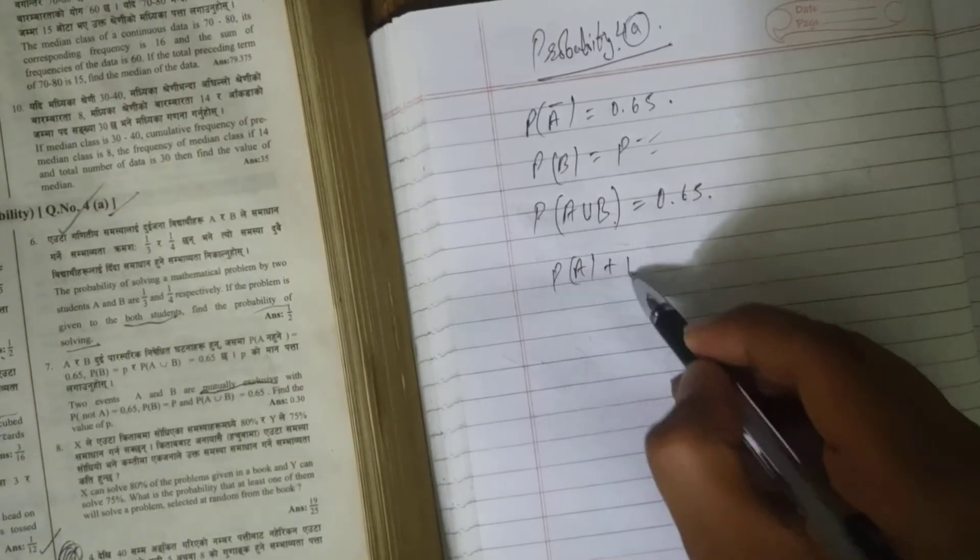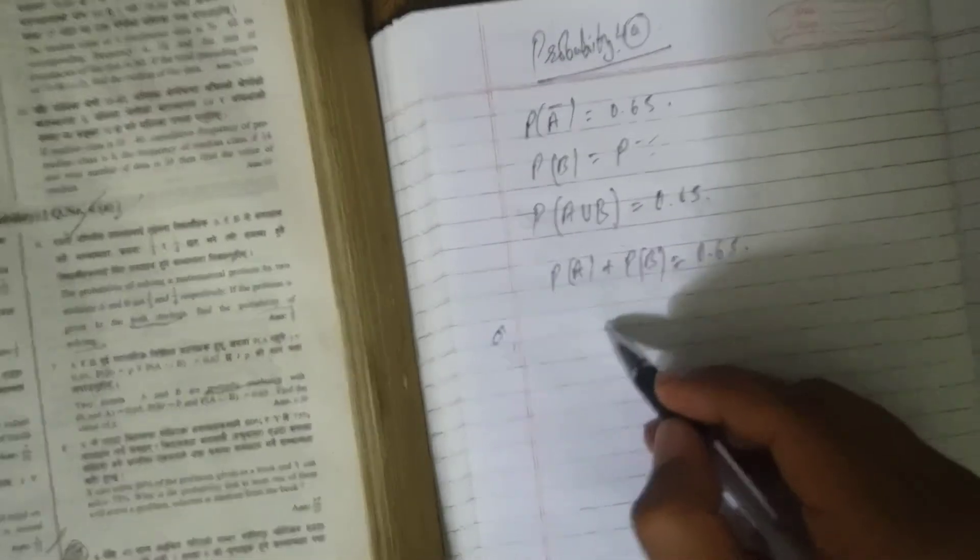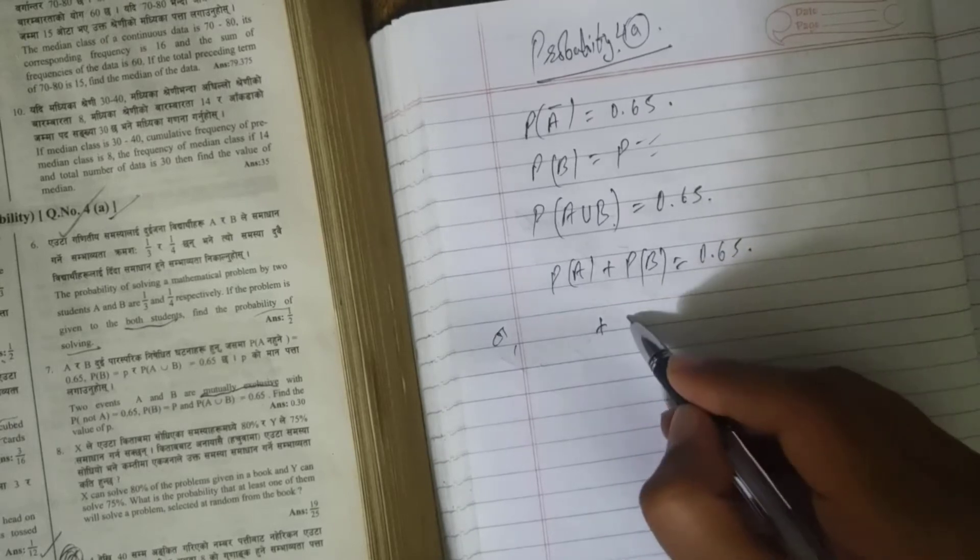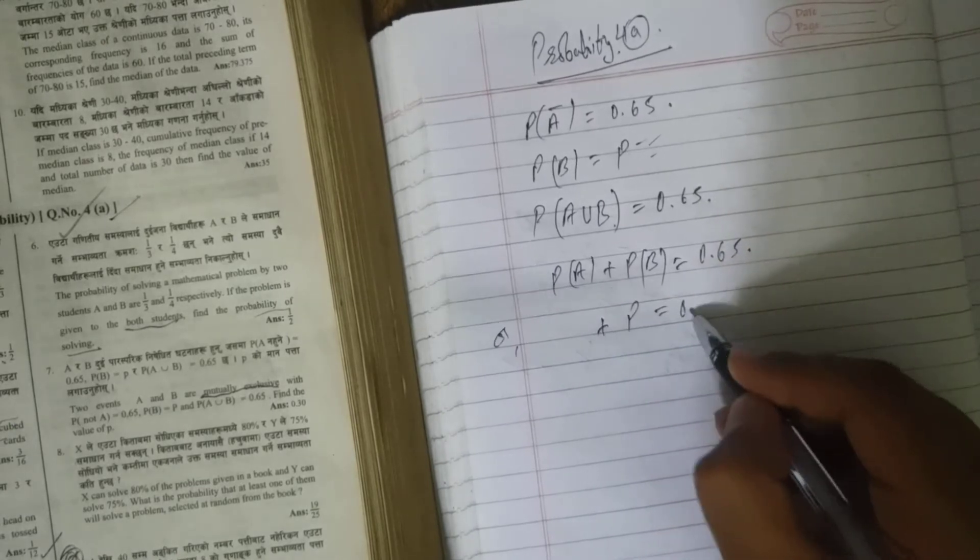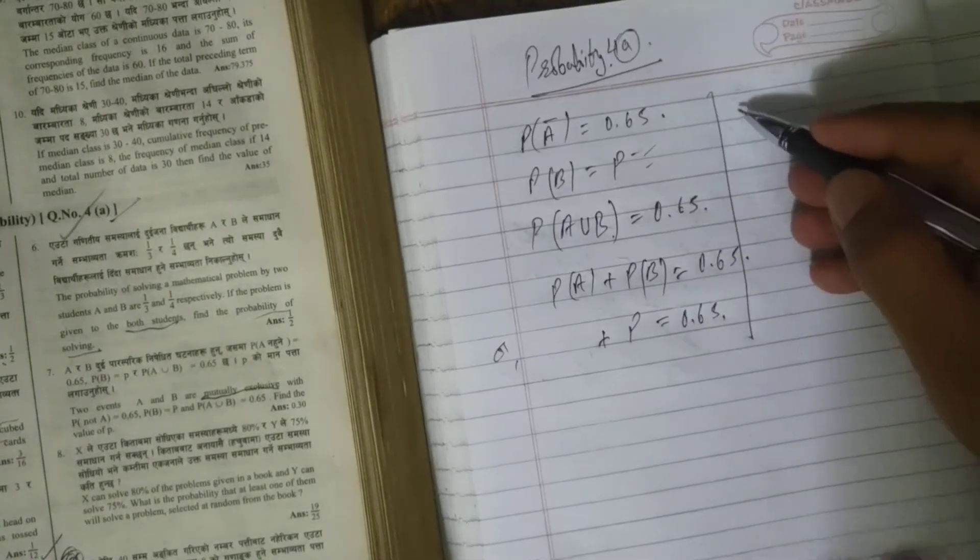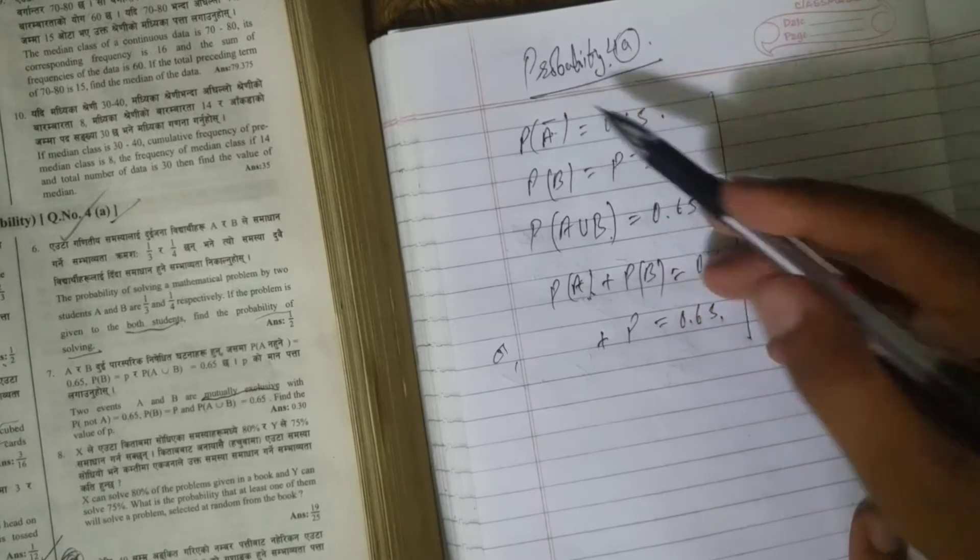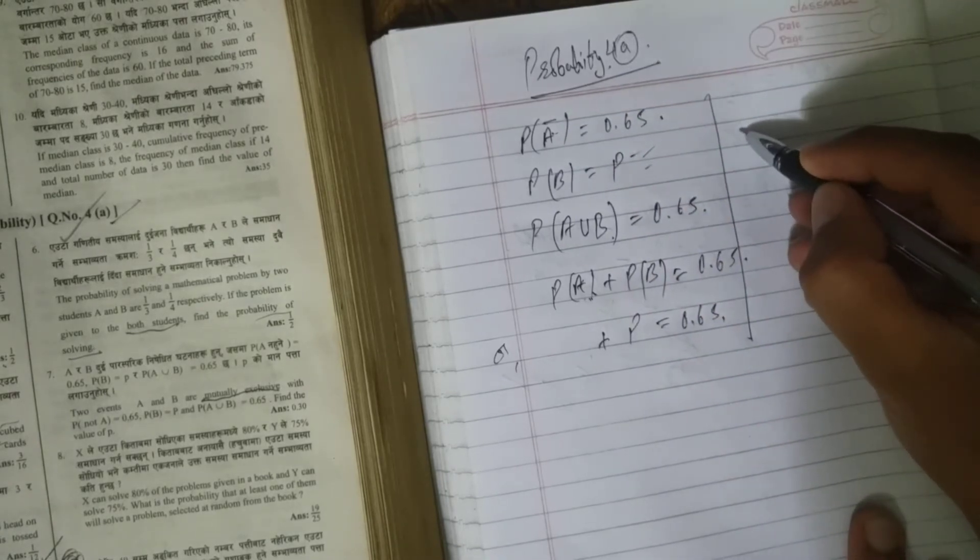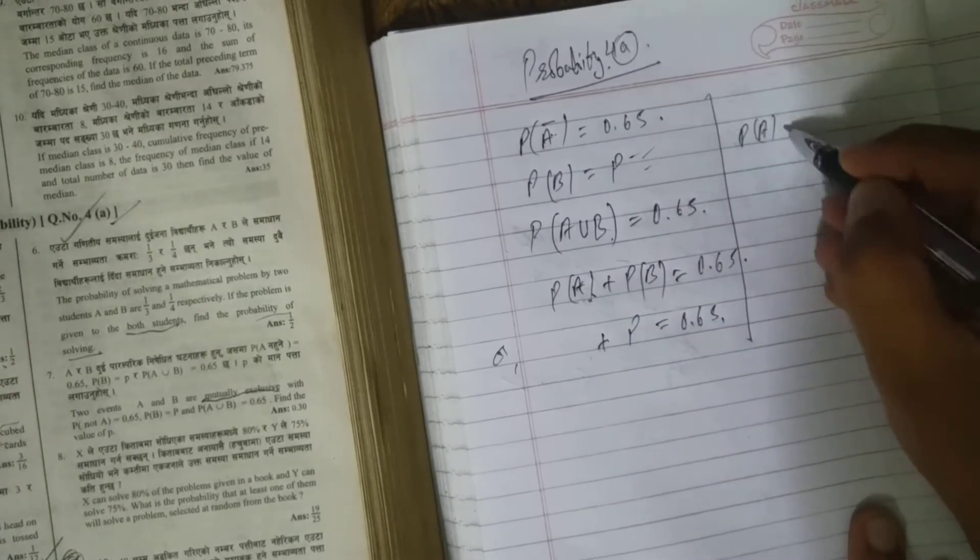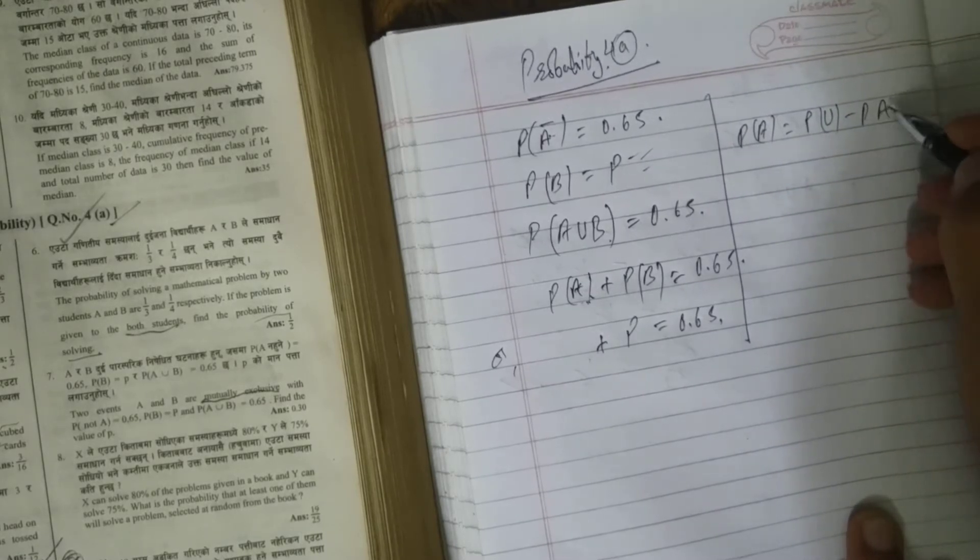P(A) + P(B) equals 0.65. We don't know this one, we know this one - this is P = 0.65. So what we can do is find out this A. Since this is A̅, what we can do is P(A) = 1 - P(A̅).